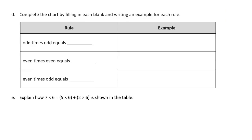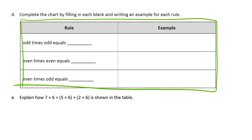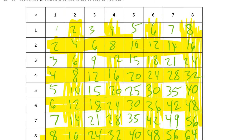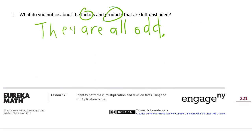Complete the chart by filling in each blank and writing an example for each rule. We can go back and check by looking at the chart. It says odd times odd equals what — let's find an example on the chart. Odd times odd: that's like three times three, which gives us nine. Three times five are both odd and give fifteen. These are all the ones left unshaded, so we know that odd times odd equals odd.